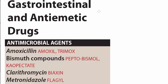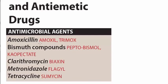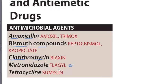Let's discuss the GI drugs — gastrointestinal drugs. In the gastrointestinal drugs we have antimicrobial agents. In the antimicrobial agents we have amoxicillin, which is a penicillin antibiotic, then we have bismuth compounds, clarithromycin which is a macrolide antibiotic, then we have metronidazole — the most used drug in GI conditions — and then the tetracyclines.